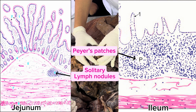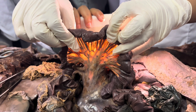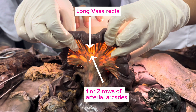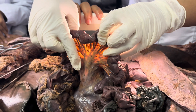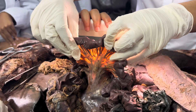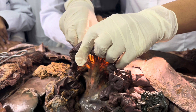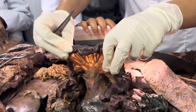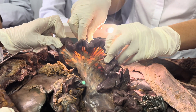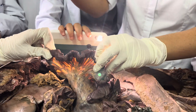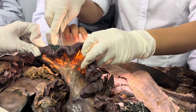Solitary lymphatic follicles are fewer and Peyer's patches are absent in the jejunum. Now we'll see the differentiation of the mesentery. In the jejunum, the arterial arcades are fewer — one to two — and the vasa recta are longer. The window is very prominent as the fat is less. These are the arterial arcades, more prominent when you throw light. These are the vasa recta and they are very clearly seen.